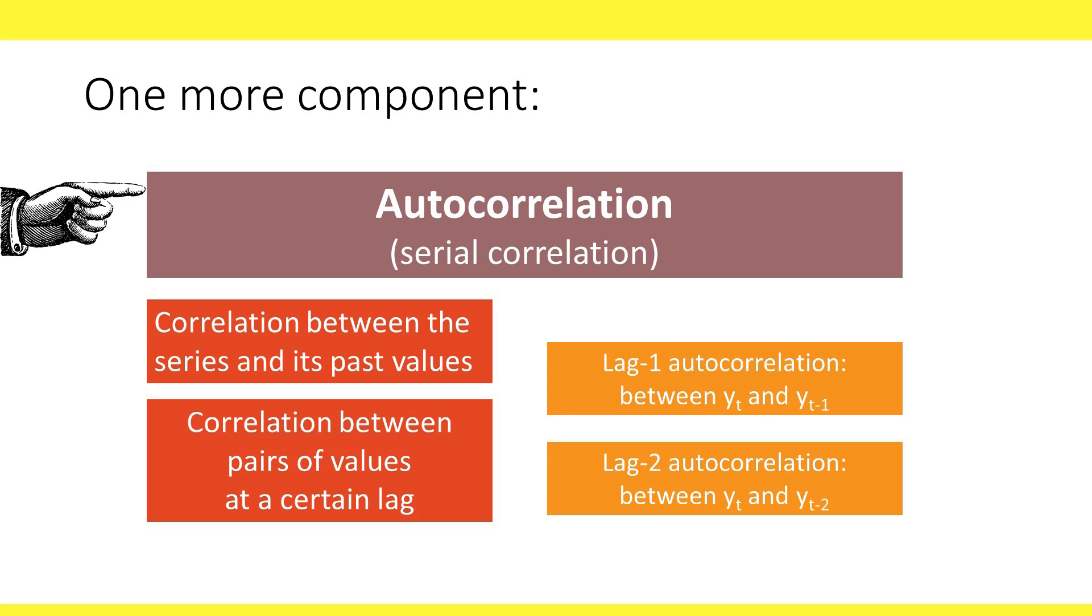For example, a lag 1 autocorrelation measures the correlation between immediate neighbors in the time series. A lag 2 autocorrelation measures the correlation between pairs of values that are two periods apart, say, yesterday and tomorrow.